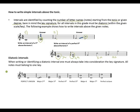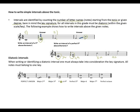Diatonic intervals: when writing or identifying diatonic intervals, one must always take into consideration the key signature — all notes must belong to one key. The first interval shown is a perfect unison. The second is a major second. The key given here is D major. Moving from D to E is a major second, diatonic. Moving from D to F sharp is a major third, still diatonic. Moving from D to G is a perfect fourth, still diatonic since G is part of the D major scale.